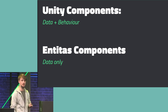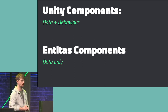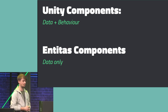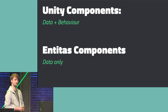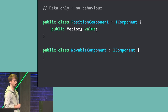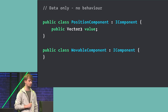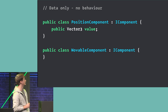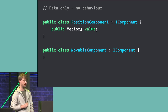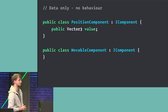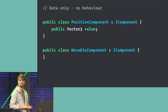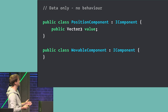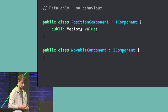The main difference is that in Unity, components have both data and behavior — data like private or public fields for speed or health, plus Awake, Start, and Update methods where you put your actual logic. In Entitas, components are data only. Here are two example Entitas components: a position component with just a Vector3, and a movable component with no fields at all — if you add it to something, it simply means that thing is movable. There is no logic, no inheritance from any object — we just implement IComponent. That's the big difference.